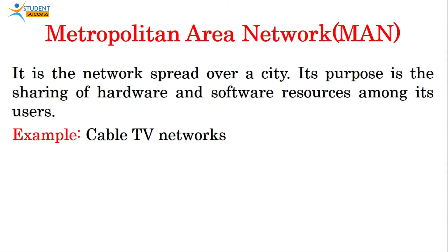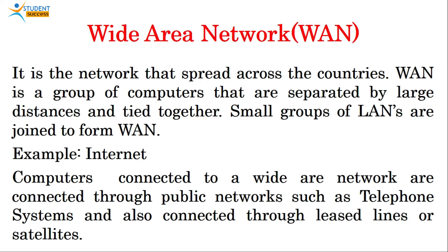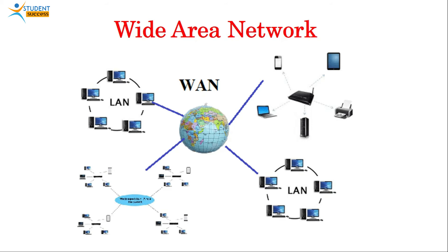The second type is Metropolitan Area Network (MAN). It is a network spread over a city, with the purpose of sharing hardware and software resources among its users. Example: cable TV networks. Small LANs are connected together to make a MAN. The third type is Wide Area Network (WAN). It is a network that spans across countries — a group of computers separated by large distances and tied together. Small groups of LANs form a WAN. Example: the internet, connected through public networks such as telephone systems, leased lines, or satellites.